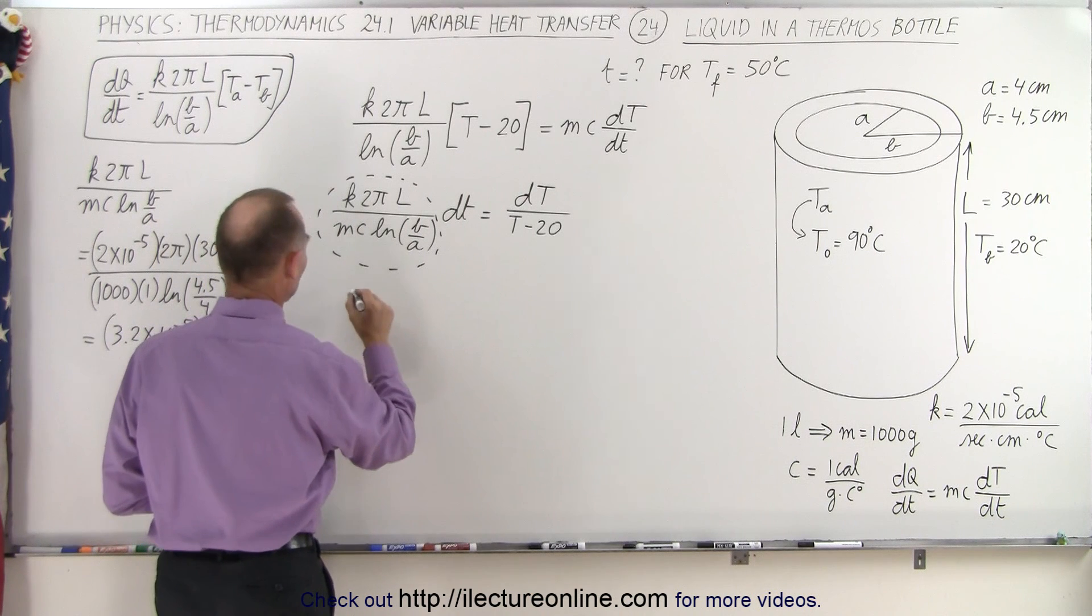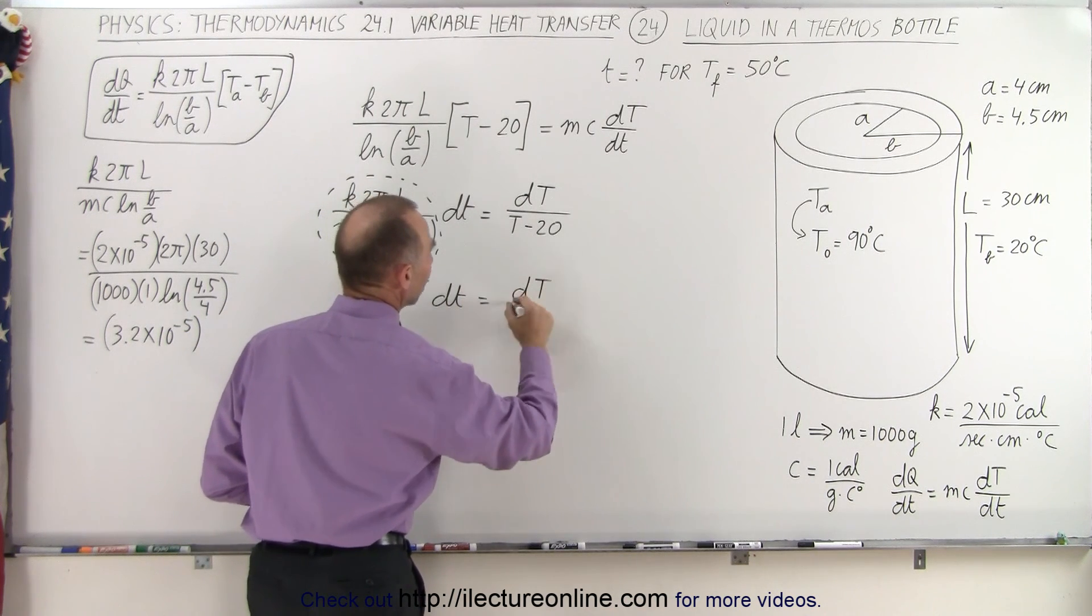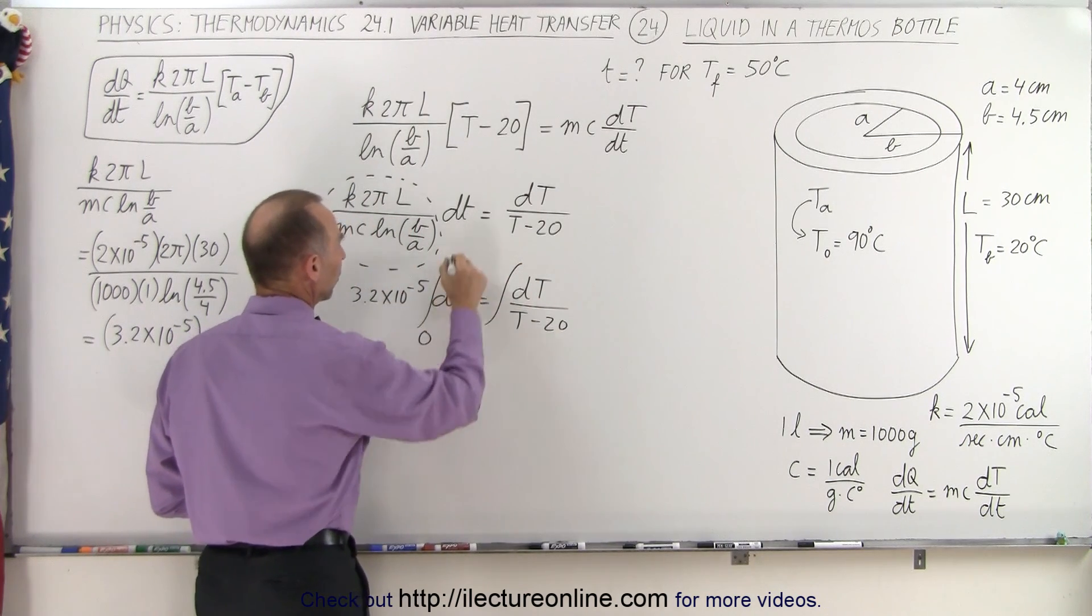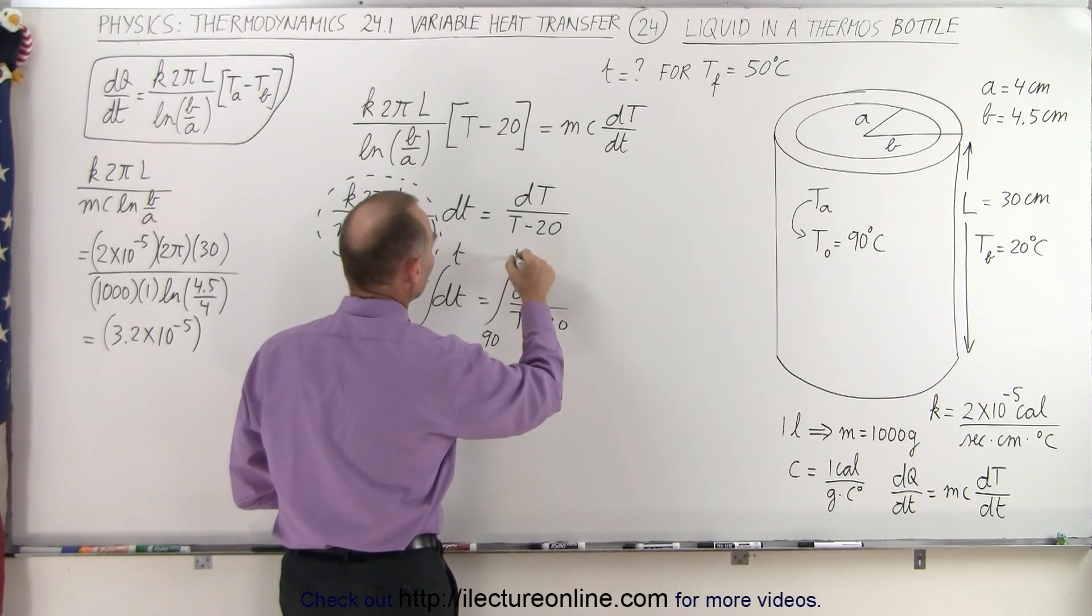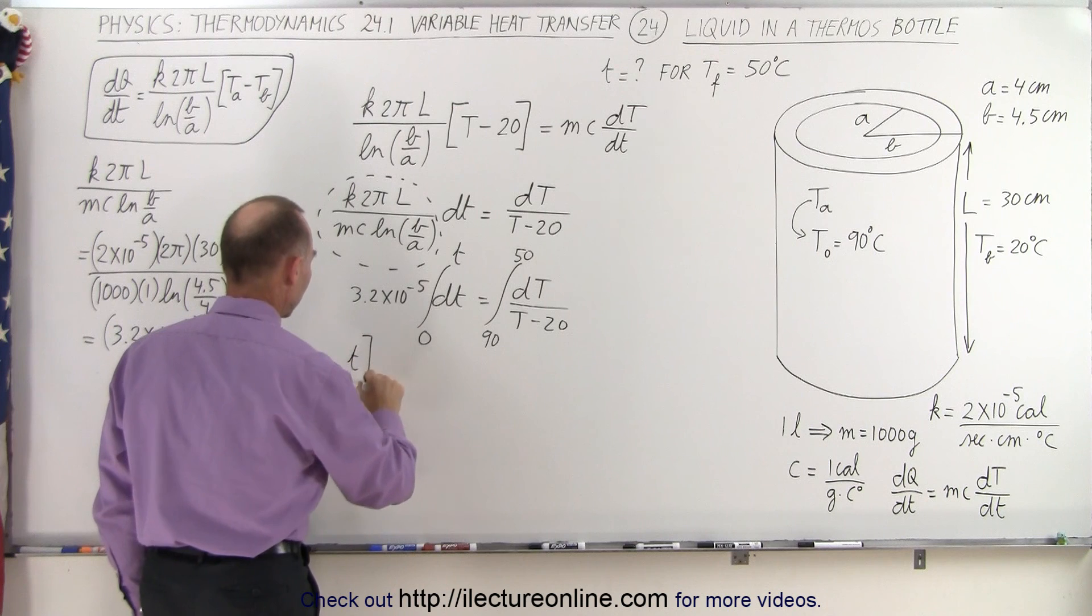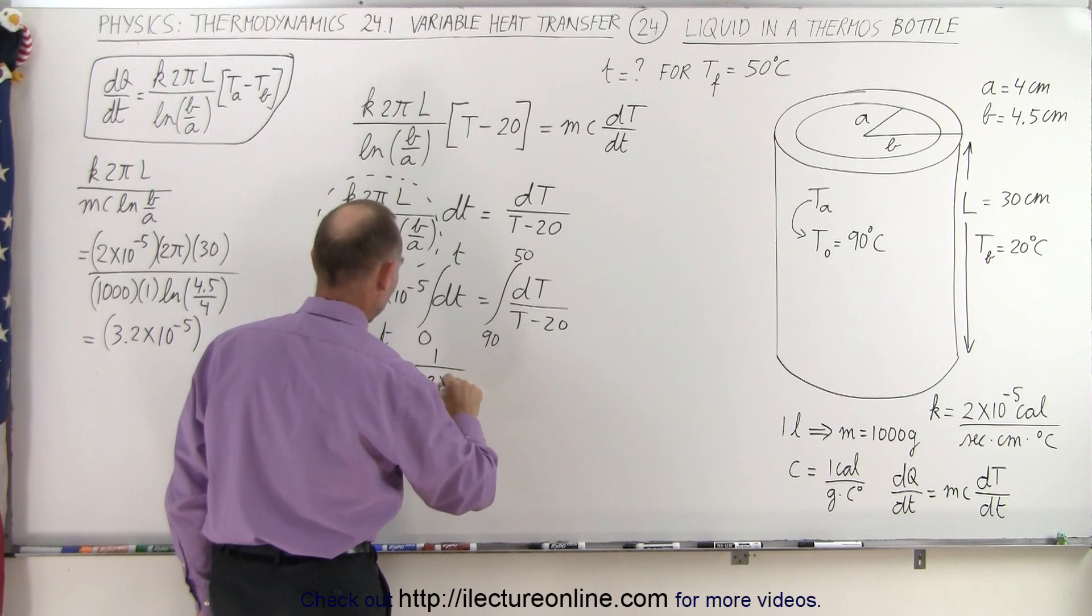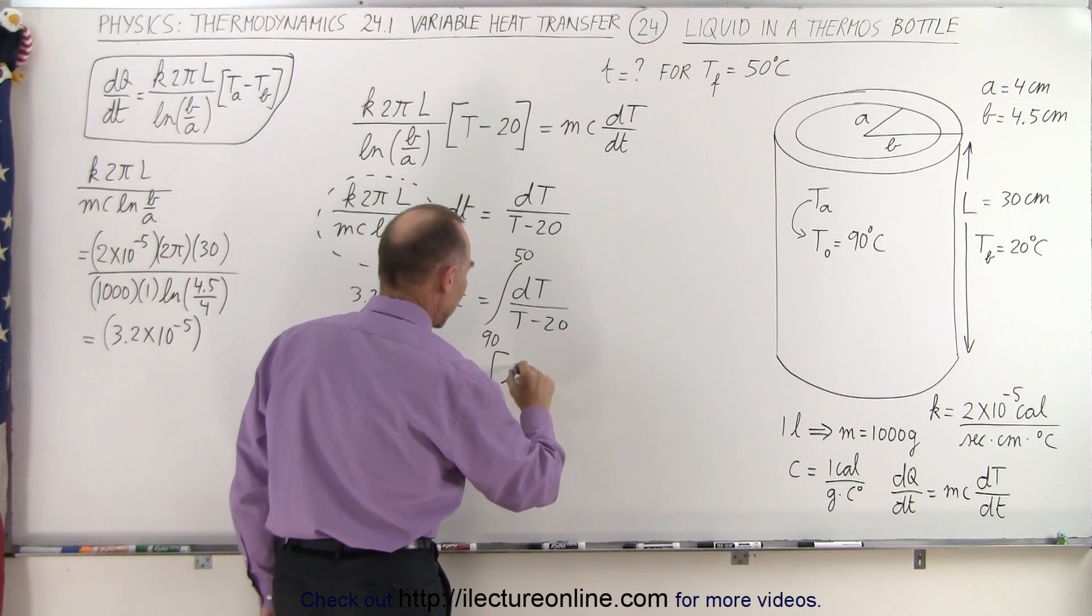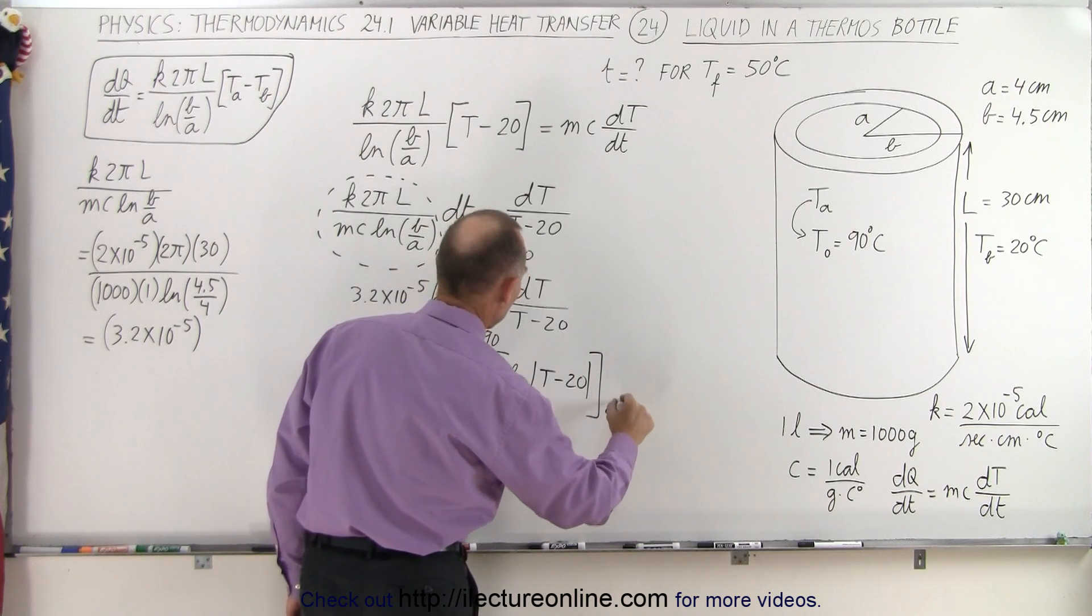So now when we replace that, we end up with 3.2 times 10 to the minus 5 times DT is equal to dT divided by T minus 20. And now we're able to integrate both sides. This is from 0 to T, the time that we're trying to find. And the temperature is going to change from 90 down to 50. So this is going to be time from 0 to T is equal to, I'll bring this down in the denominator, 1 over 3.2 times 10 to the minus 5 times the integral of that, which would be the natural log of T minus 20. And we're going to evaluate that from 90 to 50.